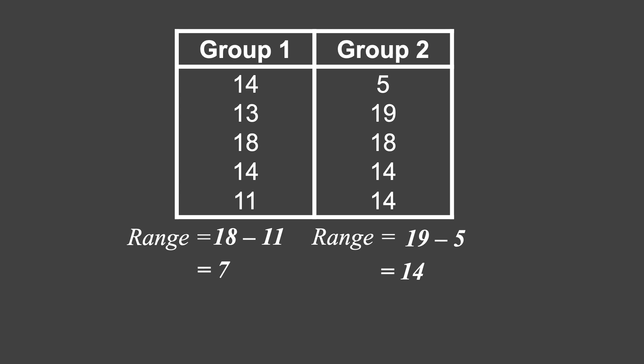The scores of the second group are more spread out compared to the first group. However, in terms of consistency, range is not recommended because other data entries are being ignored — it only considers the lowest and highest values. That's why it's not recommended to use only the range if you're concerned with the variability of the data.